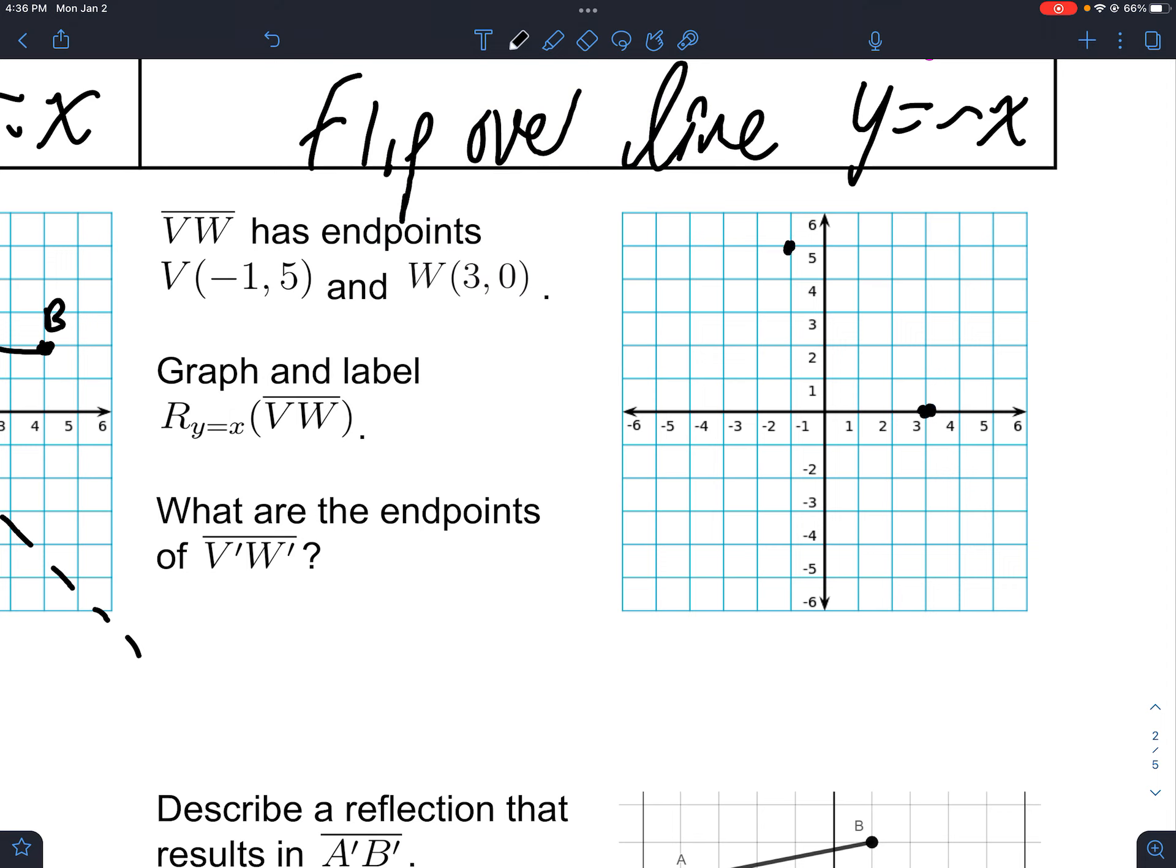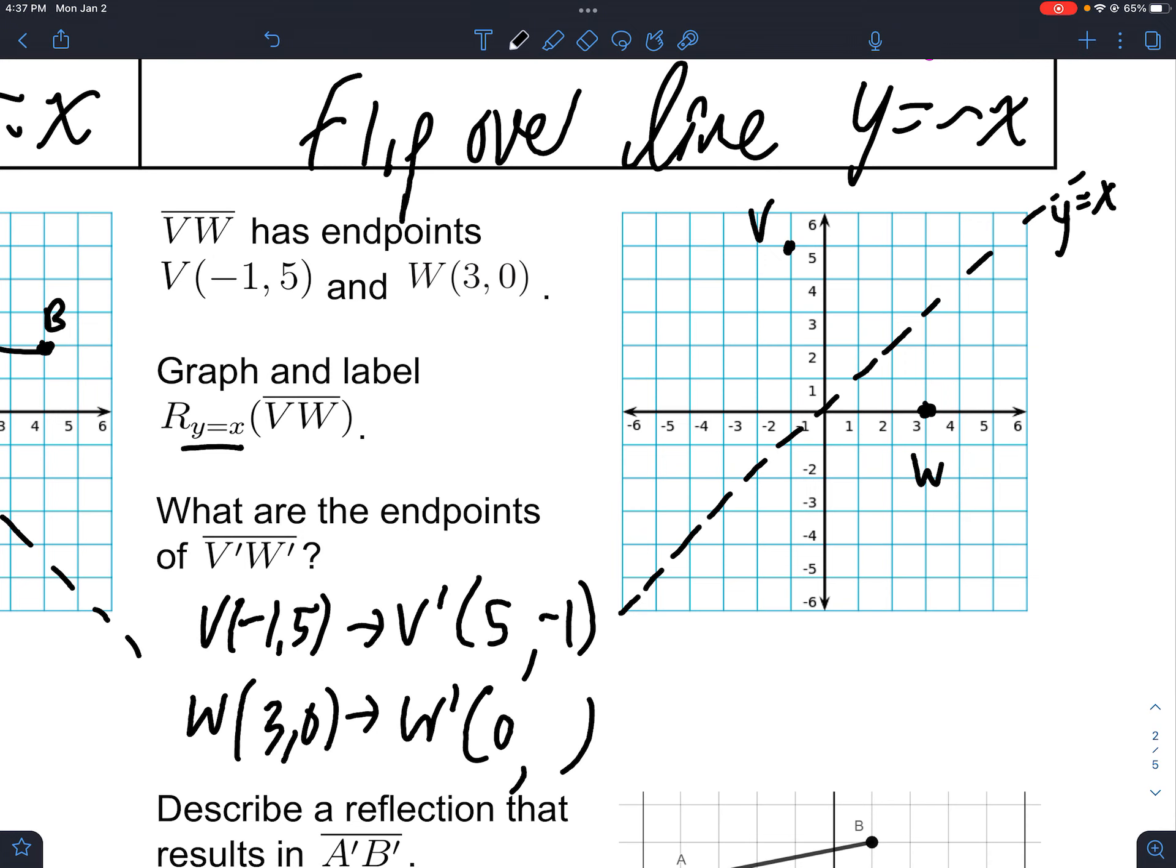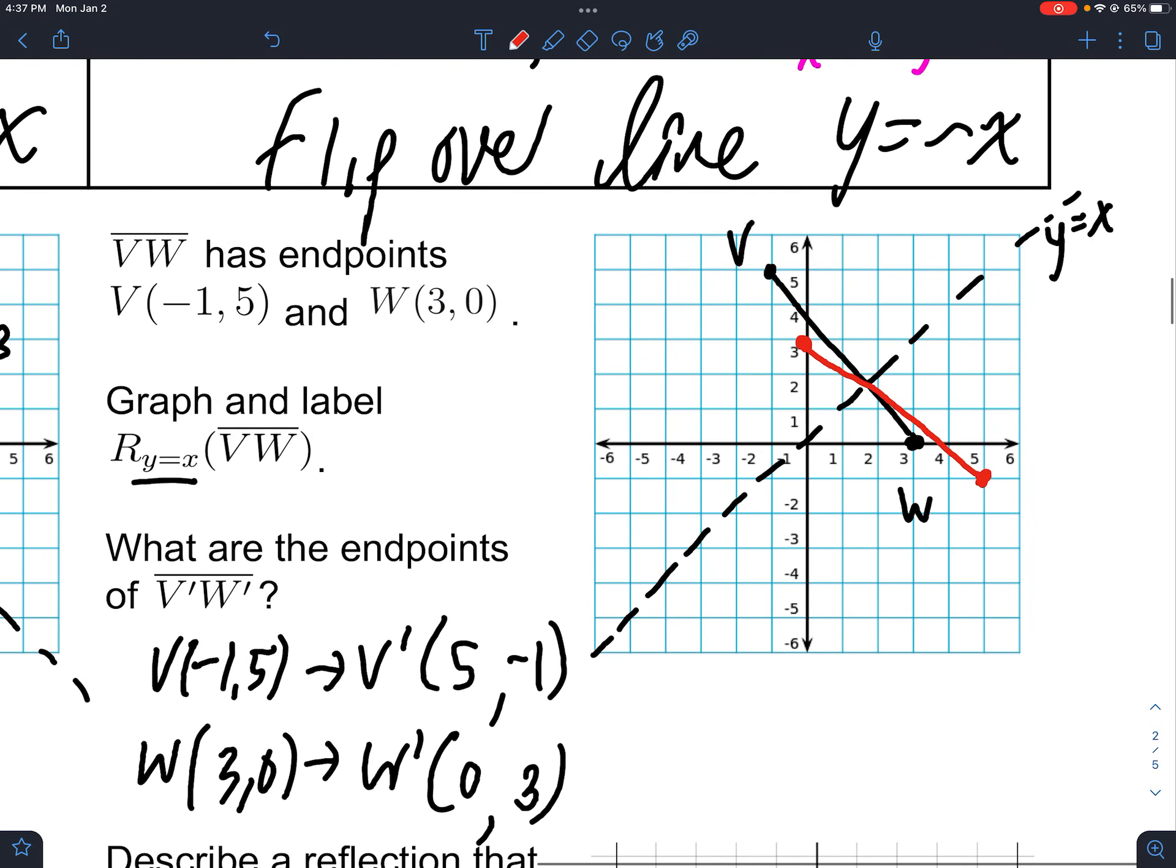(-1, 5), (3, 0), and this one we have reflecting over this y equals x. So V is going to go to V prime and W is going to go to W prime, and for this we just switch the points so we go (5, -1) and (0, 3). Notice too when your pre-image crosses the line you get an intersection point there, right, because if you're at the reflection point or reflection line and you're reflected, you stay in the same spot because you're at the line of reflection.